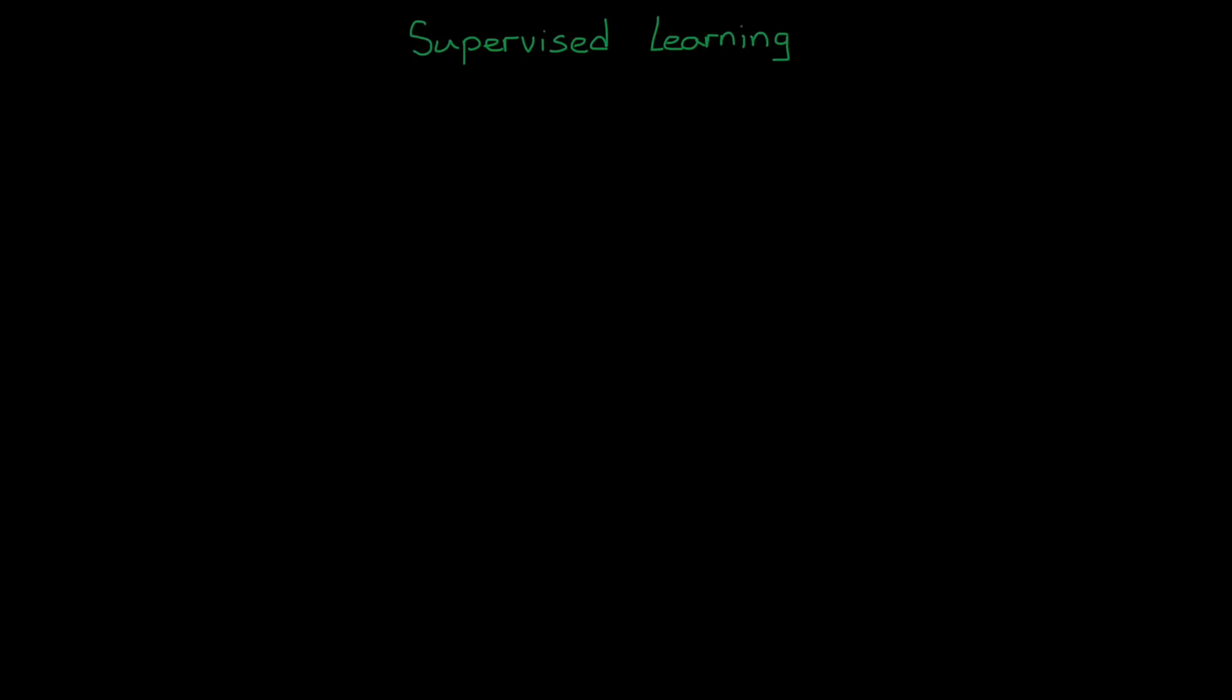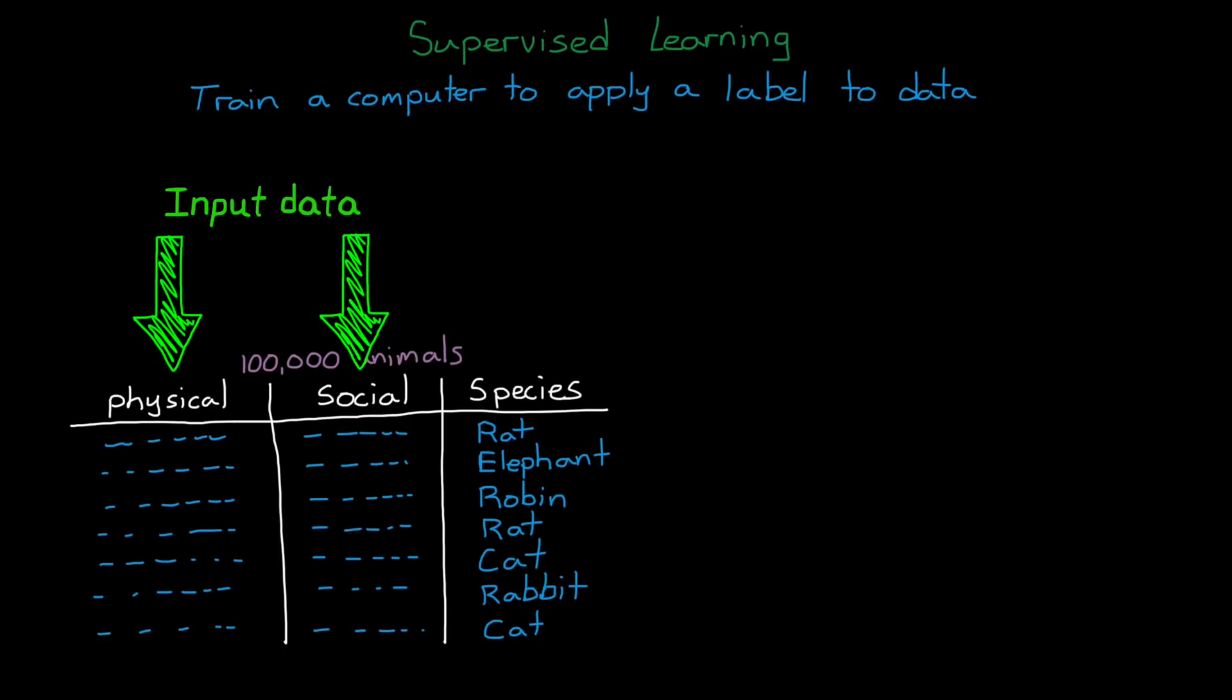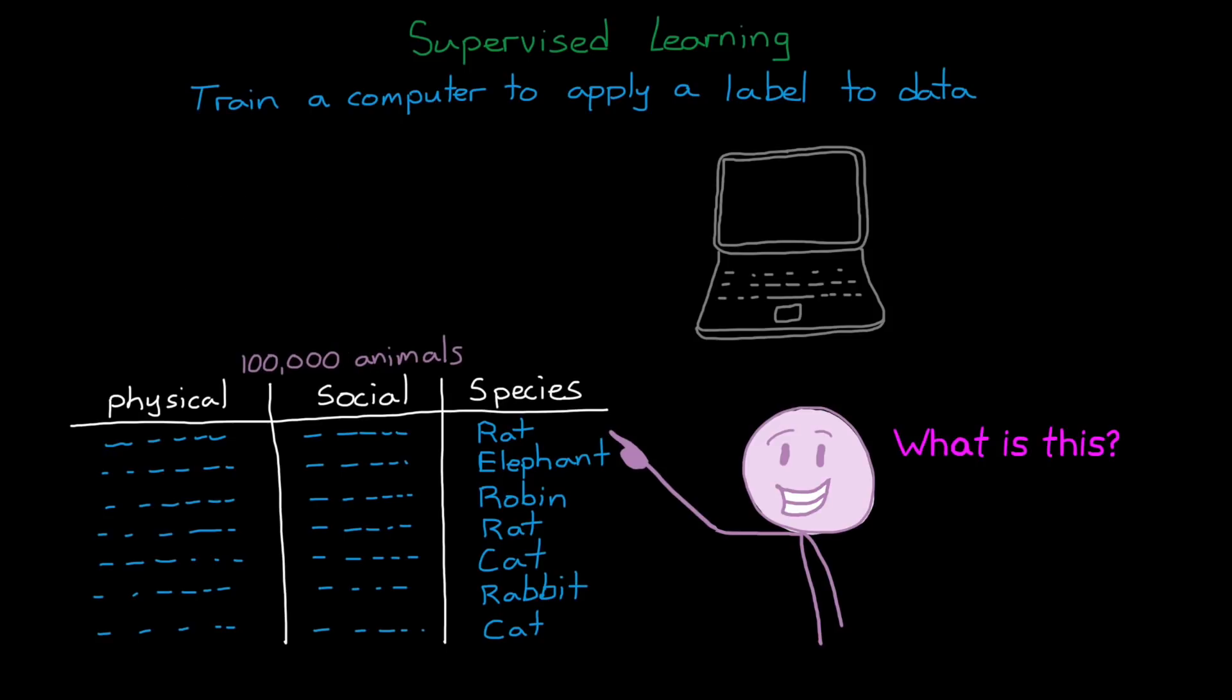Supervised learning, on the other hand, is different in a subtle way, in that we train the computer to apply a label to a given input. For example, let's say that one of the columns of our data set of animal features is the species. We can then treat species as the label, and the rest of the data as inputs into a mathematical model. Then we can use supervised learning to train our model to correctly label each set of animal features by inputting them in one at a time, letting the model guess the species, and then systematically tweaking the model based on whether that guess was correct or not.